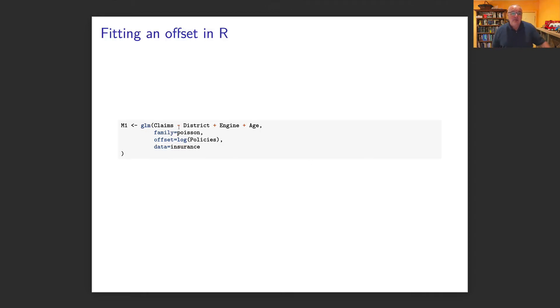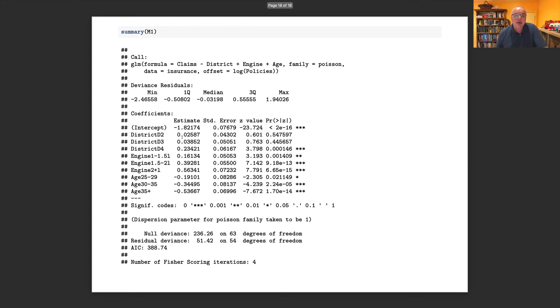So how do you do that? Well, it looks almost the same as before. We've got claims on district, engine, and age. We've got family equals Poisson, but I've got an offset. This is actually called offset, in our case, log policies, data is assurance. It doesn't appear here anyway. It doesn't need to. They're going to force the coefficient to be one. Here's all the coefficients associated with district, engine, and age.